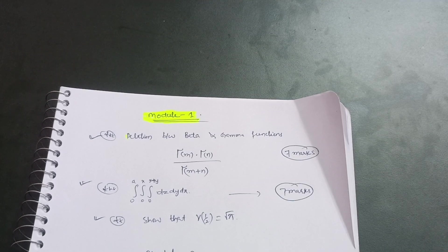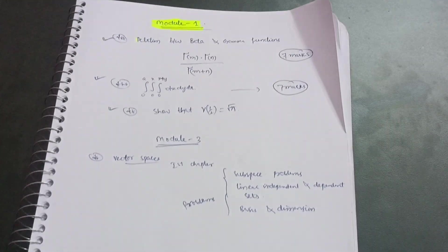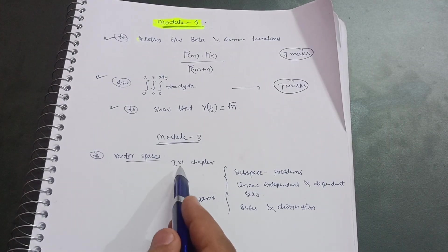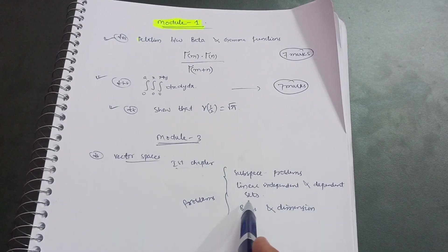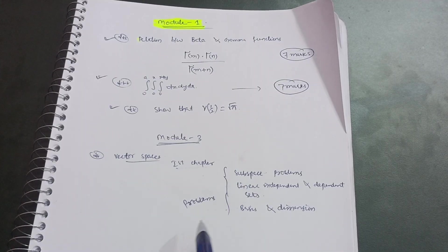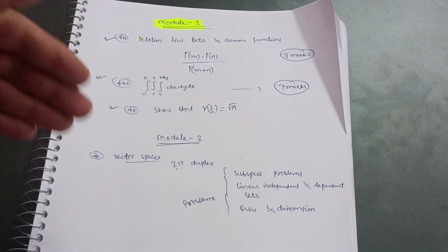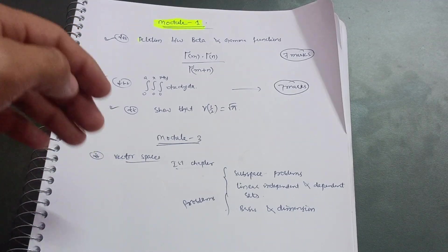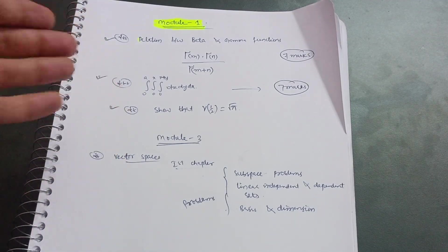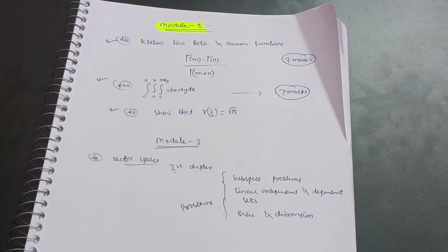Module 3 covers vector spaces and has two chapters. I recommend going through the first chapter, which has less content: subspace problems, linearly independent and dependent sets, and bases and dimensions. You can pass the subject focusing on four modules, but if you want to attempt Module 3, you can. My advice is: don't leave the paper empty — even writing given data earns you marks.